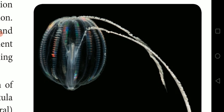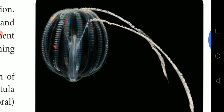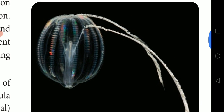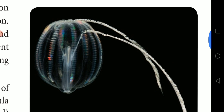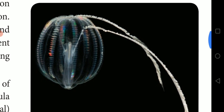Bioluminescence means the ability of a living organism to emit light. Pleurobrachia has one special feature — bioluminescence — which means they emit light at night time. This is very well marked in Ctenophores.